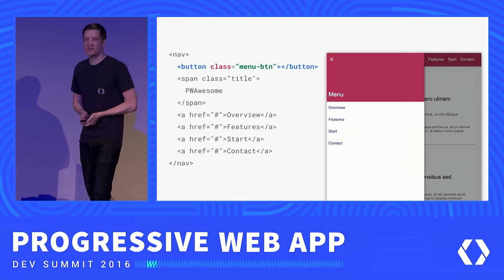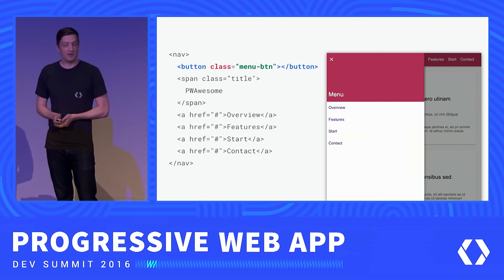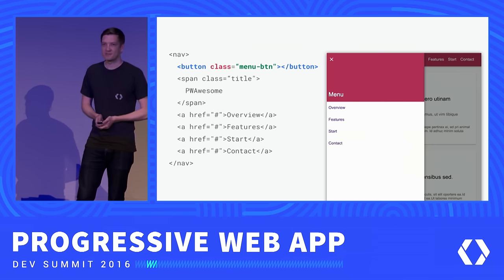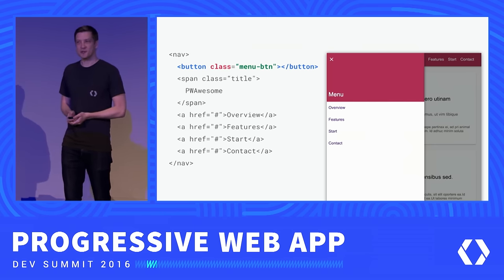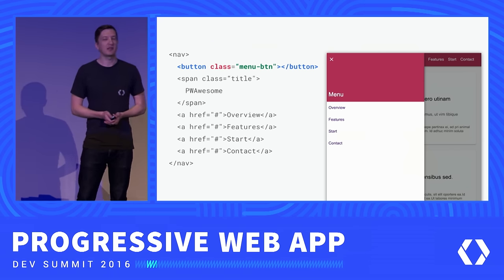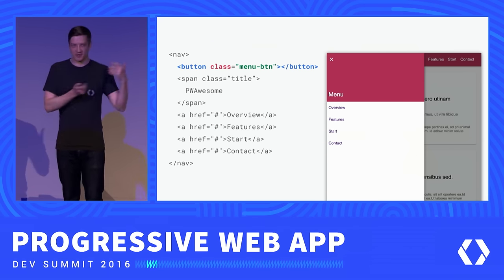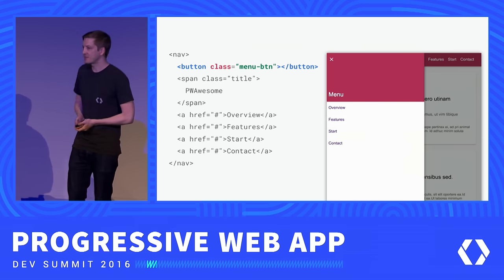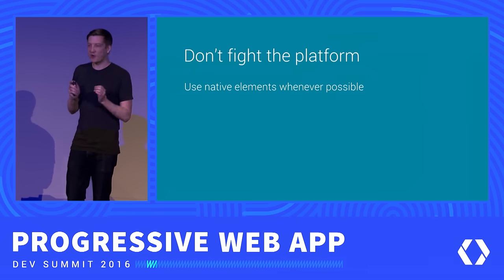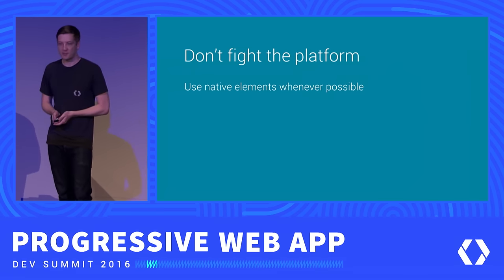If instead you have a div, make it focusable, and put an onclick handler on it, and someone hits Enter or Space, nothing happens. You actually have to add an additional keydown handler and check which key was clicked. There's really no benefit to using non-semantic elements for this kind of work. Don't fight the platform — the browser has a lot of built-in stuff trying to save you from writing extra code.